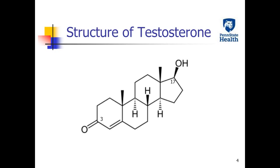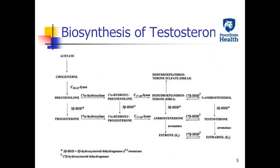The function of testosterone in women is not very clear. The structure of testosterone is made of four rings: one five-carbon ring and three six-carbon rings. It contains a keto and a hydroxy group at number three and 17 positions, respectively.